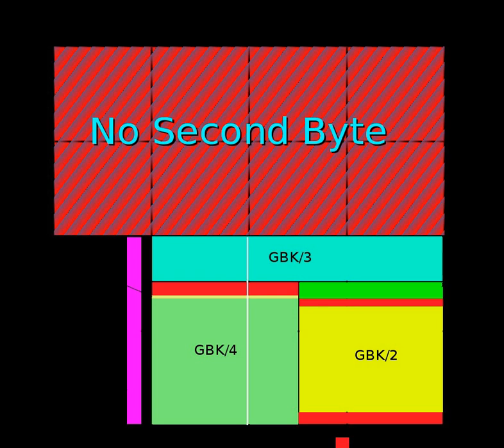The WHATWG and W3C version of GB18030 uses range tables to efficiently translate code points. ICU and GLIBC use similar range definitions to avoid wasting space on large sequential blocks.